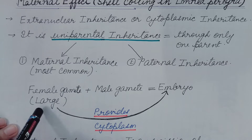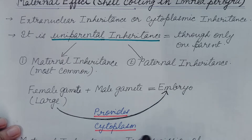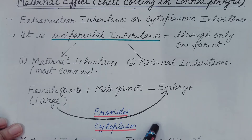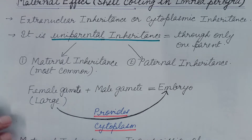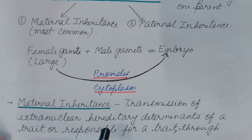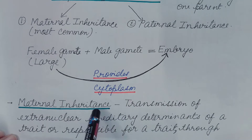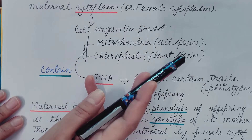The female gamete, which in most cases is larger in size, fuses with the male gamete and produces an embryo. The female gamete is the main source of cytoplasm for the embryo. When the cytoplasm is transferred from the female gamete to the embryo, transmission of the extra nuclear heredity determinants of a trait also takes place through the maternal or female cytoplasm.